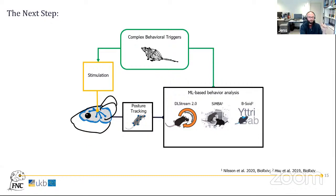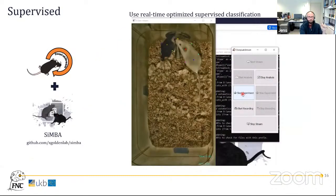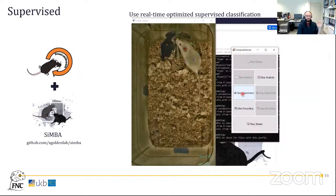Coming from simple derivatives like position, head direction, and speed — or region-of-interest-based triggers — we want to be able to look at stereotypic behavior in a more complex way. We teamed up with two toolkits enabling offline machine learning-based classification of behavior: SimBA (Simple Mouse Behavior Analysis) and B-SOID, to give DeepLab Stream users the ability to use real-time classification of complex behavior.